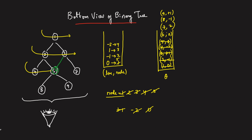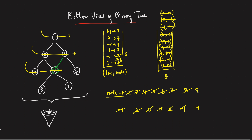Next we get node 6 with line 0. The map entry for line 0 gets overwritten by 6 — we're taking the rightmost on the level order traversal. Node 6 has no left and no right, so it's done. Next, node 7 is at line 2, so line 2 gets 7. Node 7 has no children. Next, node 8 with line minus 1 — so minus 1 gets replaced by 8. Node 8 has no children. Finally, node 9 at line plus 1 — line 1 gets 9. Node 9 has no children, so it's done.